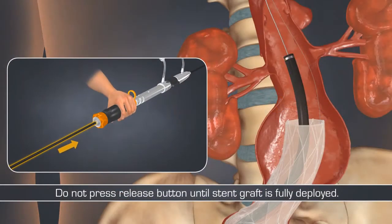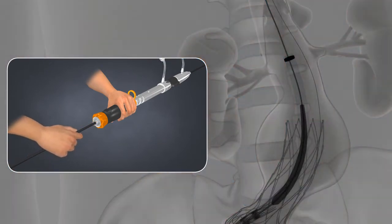Keeping the extension delivery system handle stationary, advance the inner core. This motion advances the stent graft through the introducer sheath.